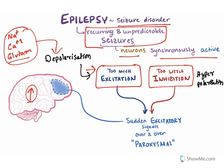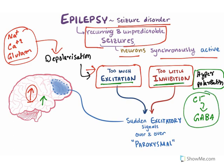Hyperpolarization is because of entry of chloride ions, which may be due to the neurotransmitter gamma-aminobutyric acid (GABA). CNS hyperactivity is what causes epilepsy — either because of too much excitation or too little inhibition. When there is very little hyperpolarization, that also causes epilepsy. This results in sudden excitatory signals occurring over and over again, which is called a paroxysmal condition.